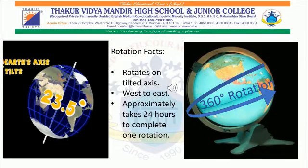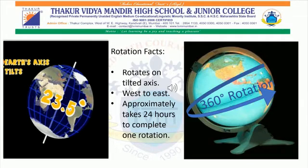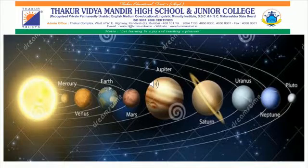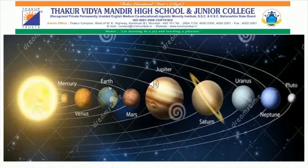Here are some facts about the rotation of the Earth. Earth rotates on a tilted axis, i.e. 23.5 degrees tilted. It rotates from west to east and takes approximately 24 hours to complete one rotation. Earth also revolves around the Sun and it takes approximately 365 days to complete one revolution. Rotation and revolution of the Earth are two major reasons for the seasons occurring on the Earth.